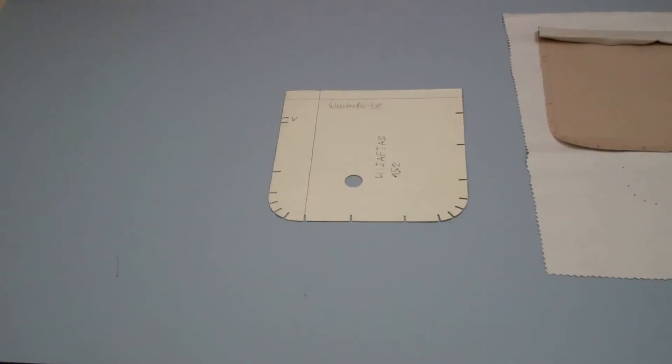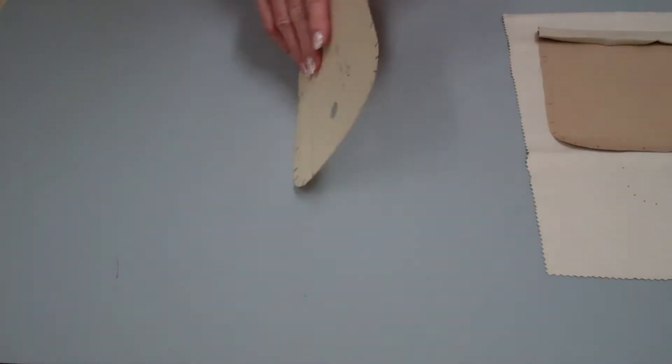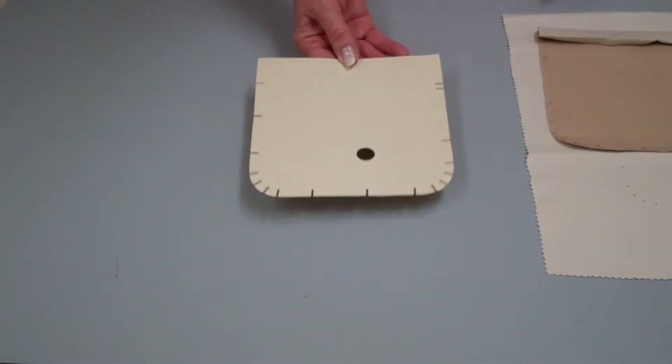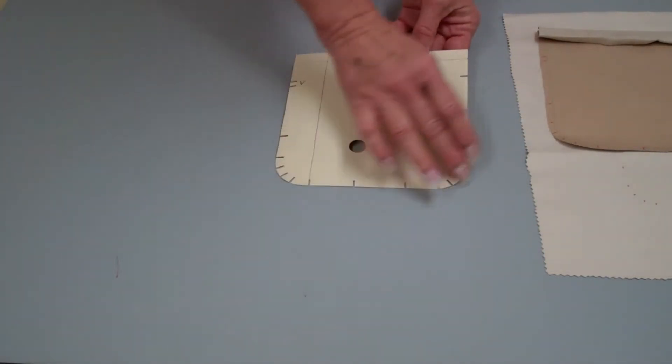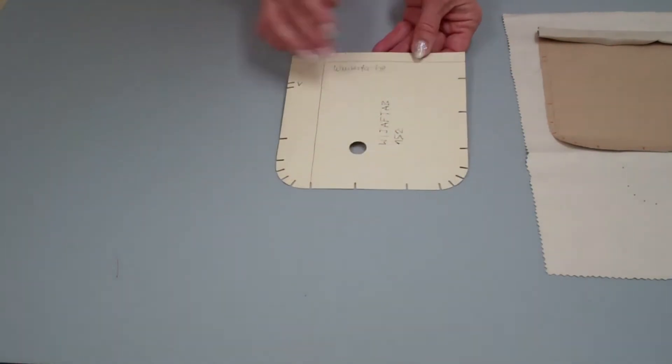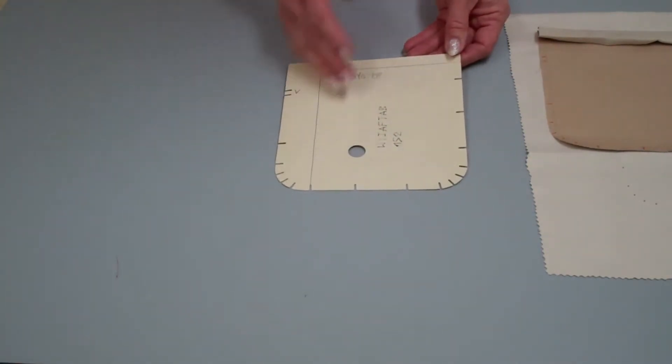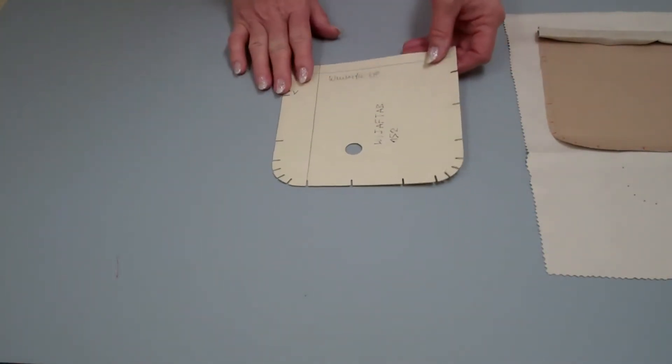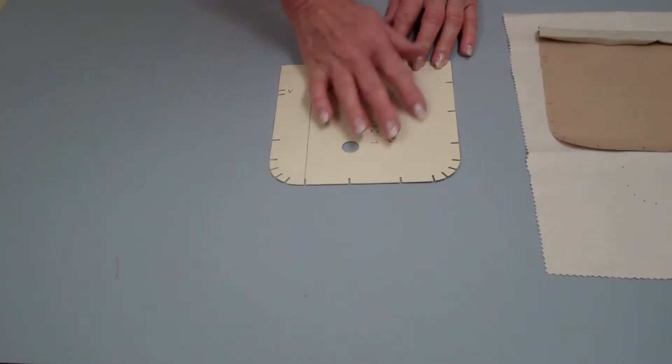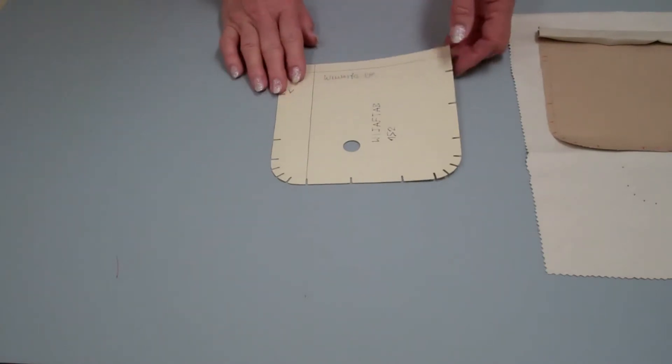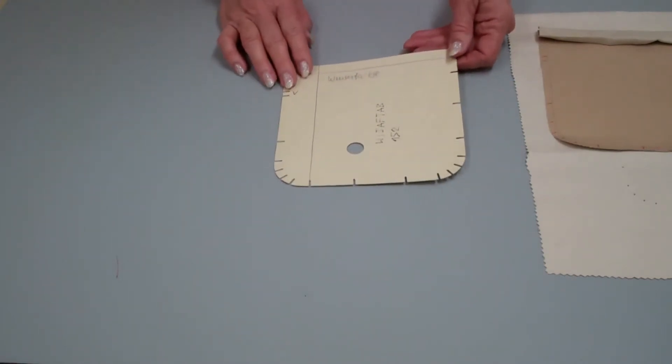To do this blind stitched on pocket you will first of all have to make a very good pattern. Make the pattern exactly the size that your pocket will be when you're finished with it. That means choose a curve around that you would like to have, the height, the width. It doesn't matter. Of course, the bigger the pocket is, the easier it is to make. The smaller, the little bit more difficult.